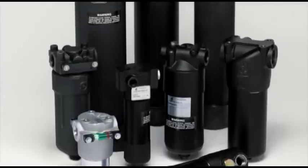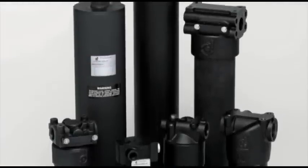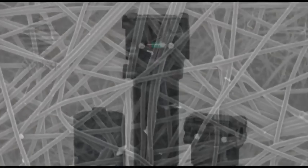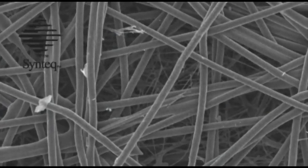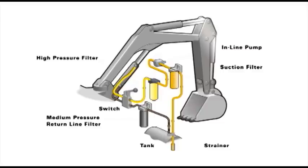All of our high-pressure filters contain Donaldson's Syntex synthetic filter media, specially developed by Donaldson for high-efficiency liquid filtration. After doing its work, the hydraulic oil proceeds back to the holding tank. It first passes through the medium pressure return line filter, which removes contaminants generated during component activity.